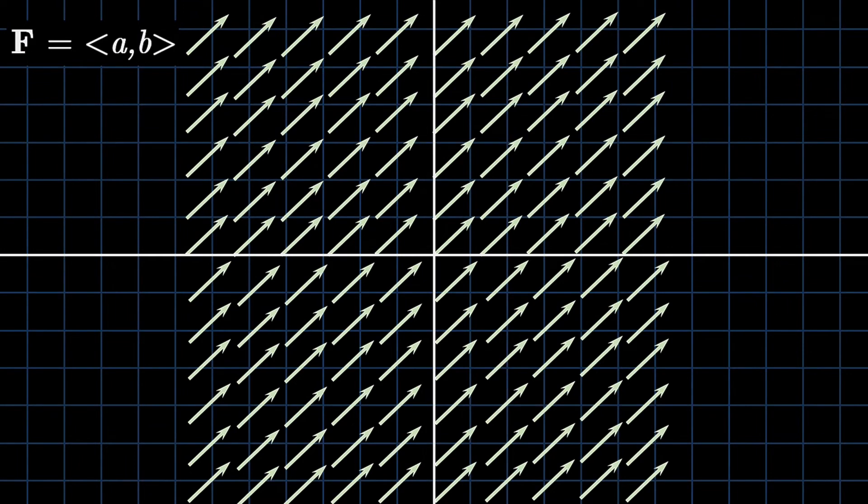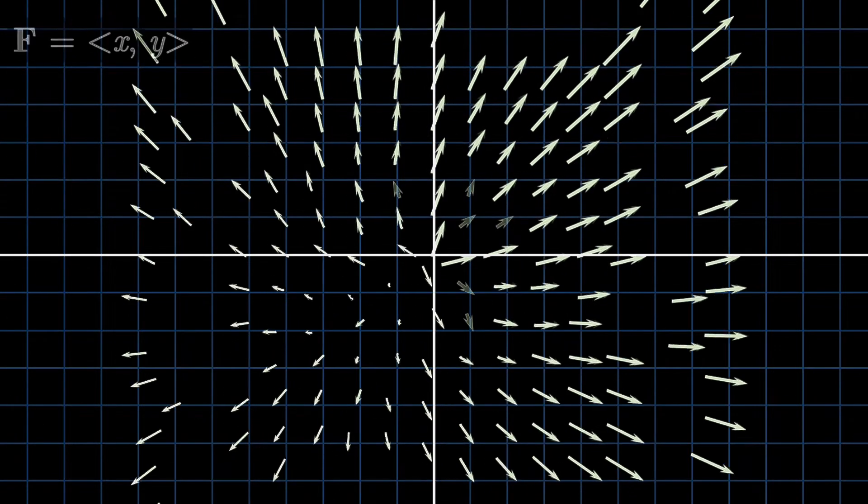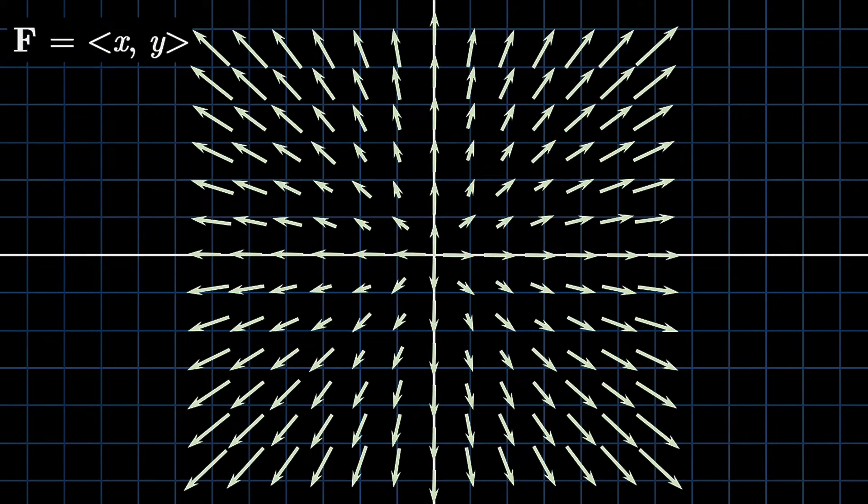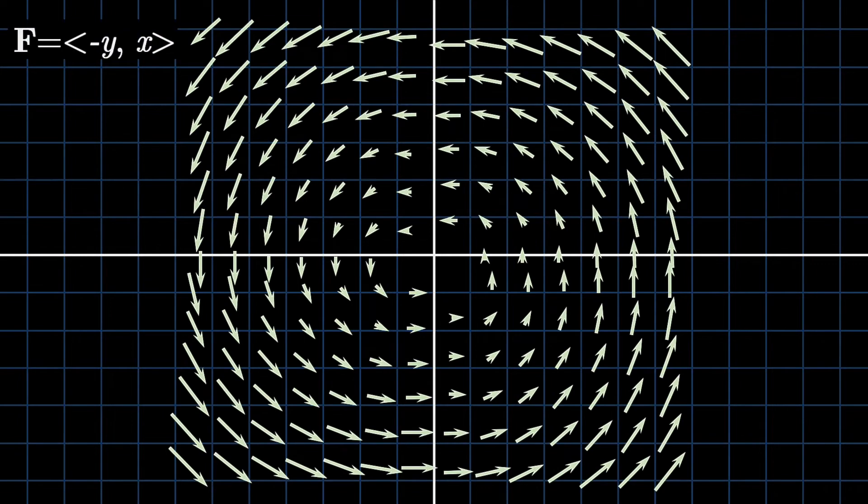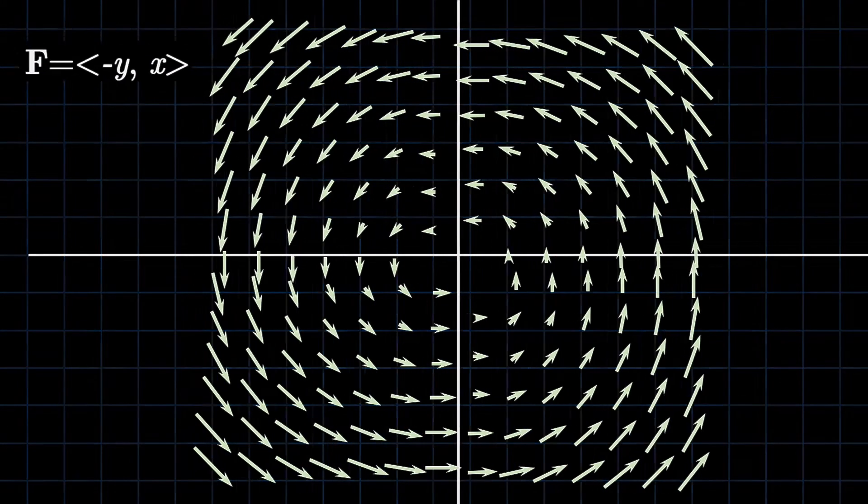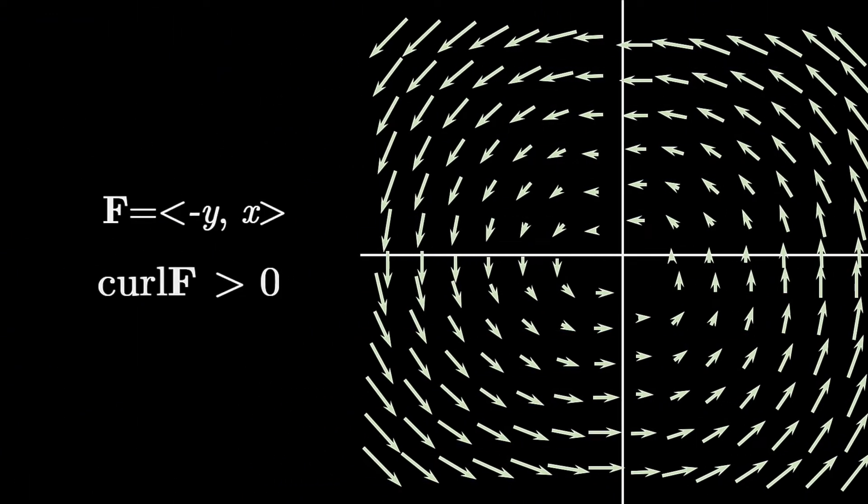Curl measures the rotation component of a motion. This is called the vorticity of a vector field F. For example, imagine this field where we can see that there is no curl present, as there is no vorticity or rotation aspect. Although, if you look at this field where this is <-y, x>, we can clearly see a rotation present as the entire field rotates around the origin. So we can say that rotation is indeed present. A counterclockwise rotation is positive and a clockwise rotation is negative.